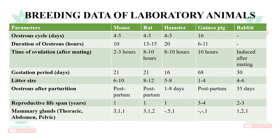Reproductive lifespan is approximately 1 year in mouse, rat, and hamster; 3–4 years in guinea pig; and 2–3 years in rabbit. Mammary glands are present in the thoracic, abdominal, and pelvic regions. Mouse has 5 mammary glands (3 thoracic, 1 abdominal, 1 pelvic); rat has 6 (3 thoracic, 1 abdominal, 1 pelvic); hamster has none in thoracic but 5 in abdomen and 1 in pelvic region; guinea pig has 1 in pelvic region only; and rabbit has 4 (1 thoracic, 2 abdominal, 1 pelvic).